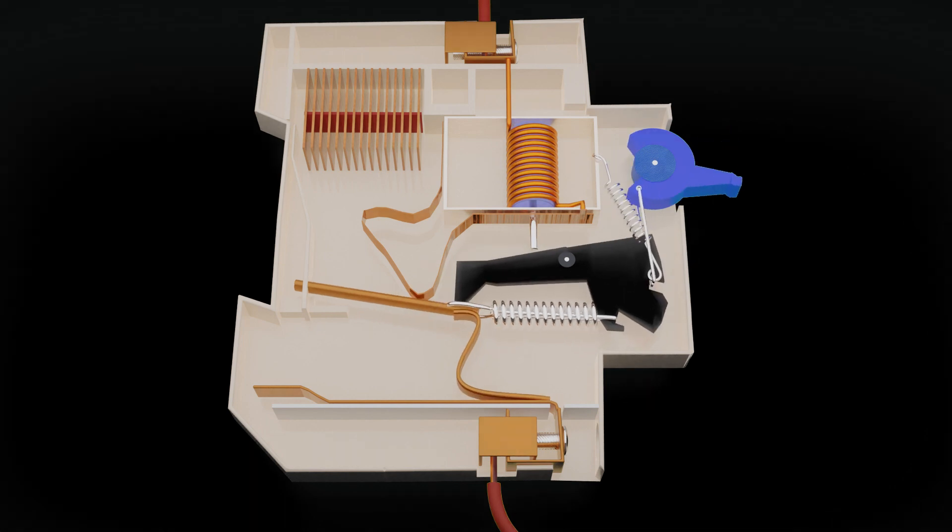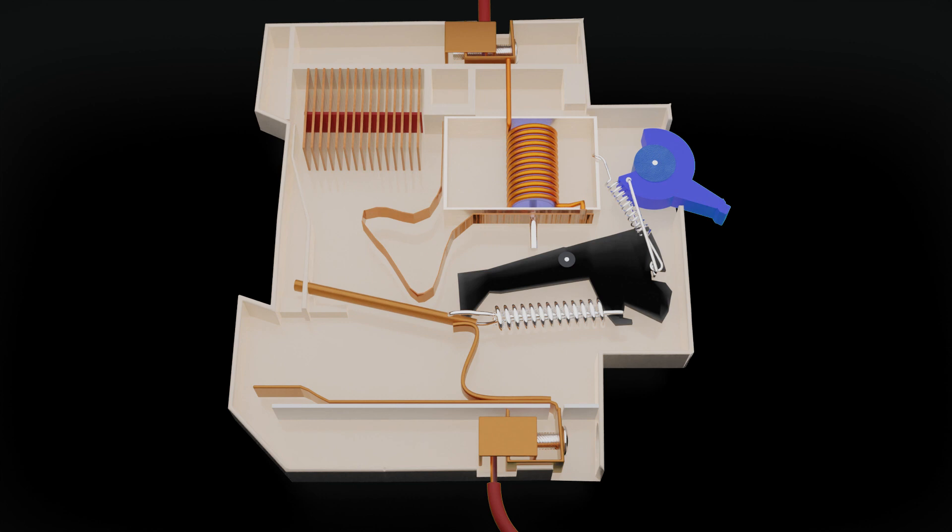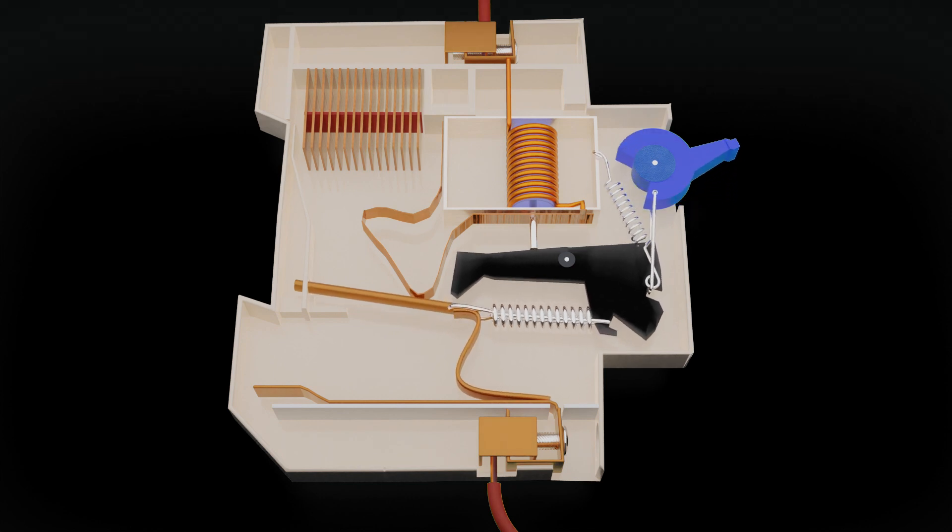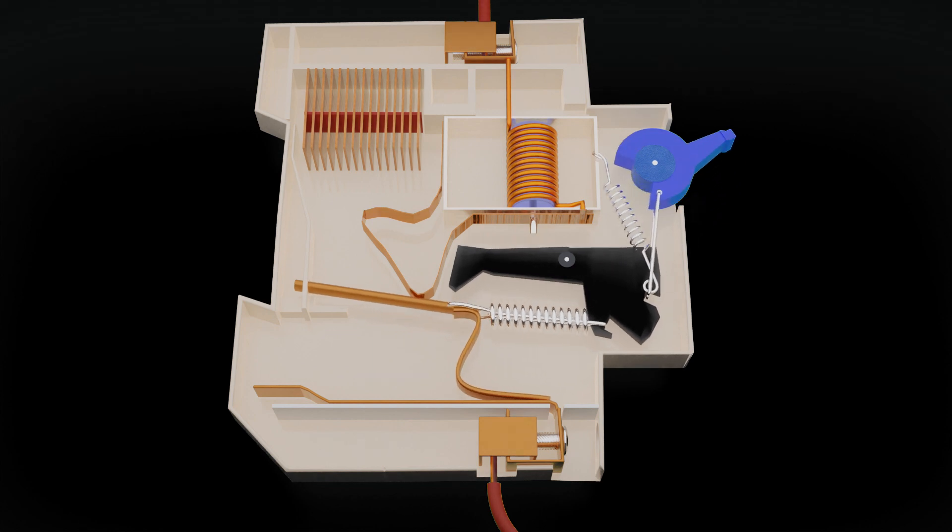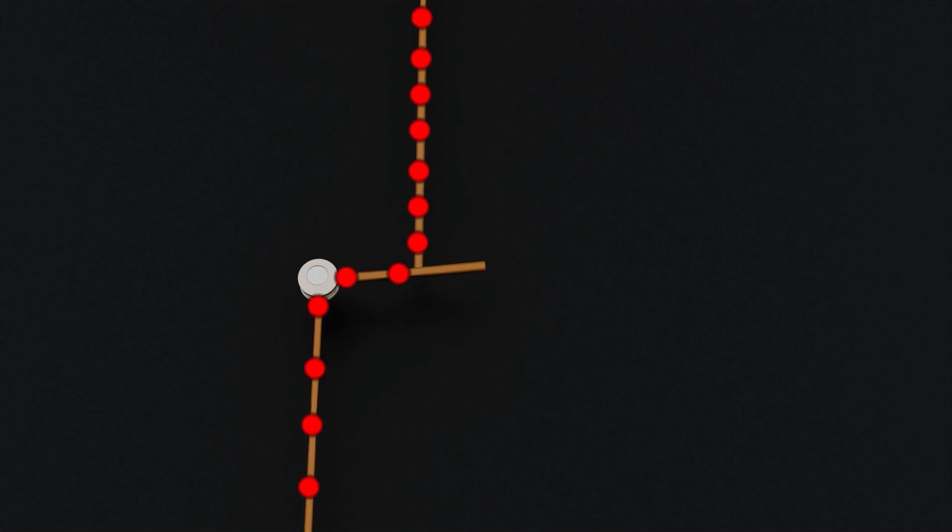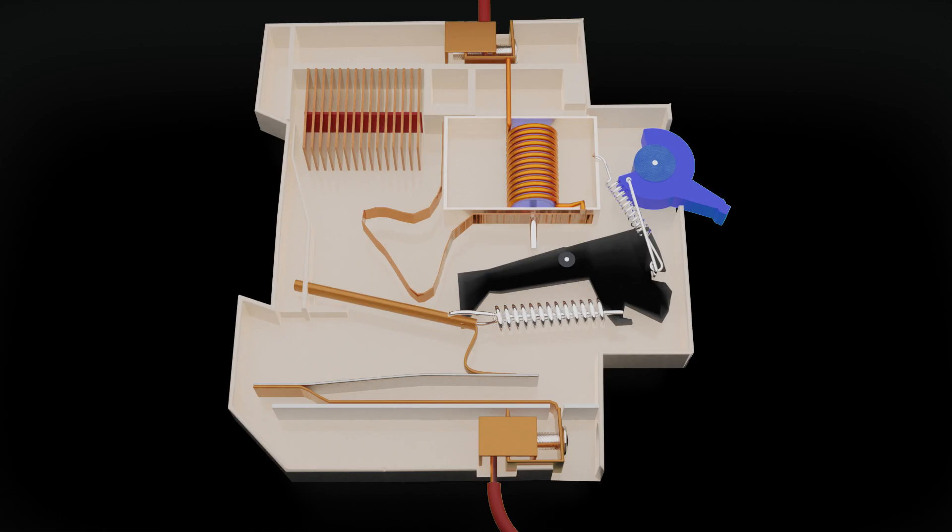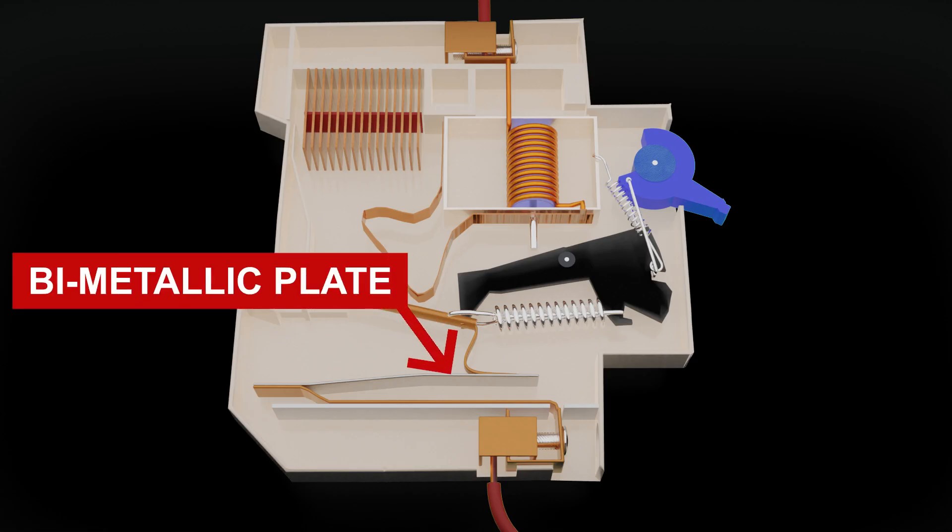So friends, it is possible to automatically protect from short circuit using this mechanism. Apart from short circuit, one more problem—overload—can be solved with this MCB. In overload condition, the current flow in the circuit also increases, but not as much as in short circuit. Bimetallic plate is used in MCB to solve this problem. If too much current flows through the bimetallic plate, it heats up and bends, and as a result, the connection breaks.